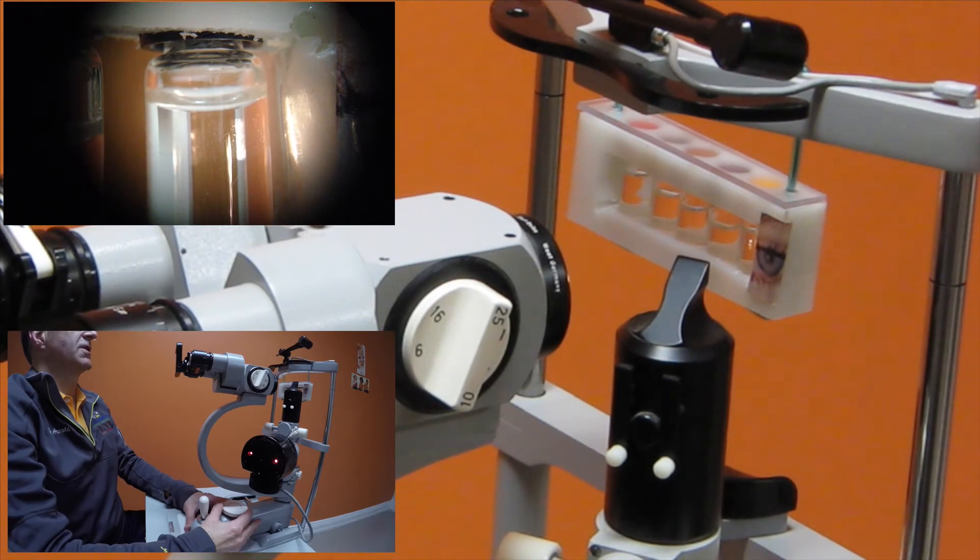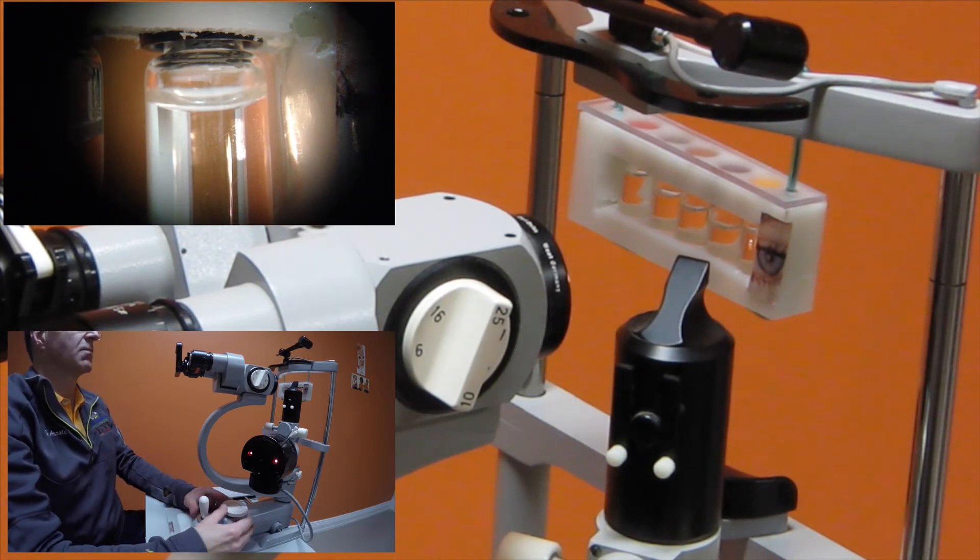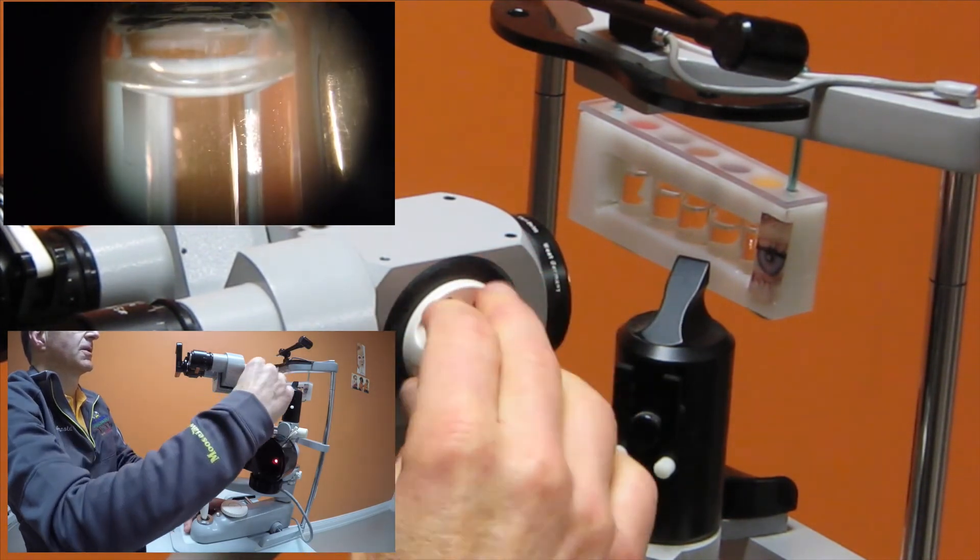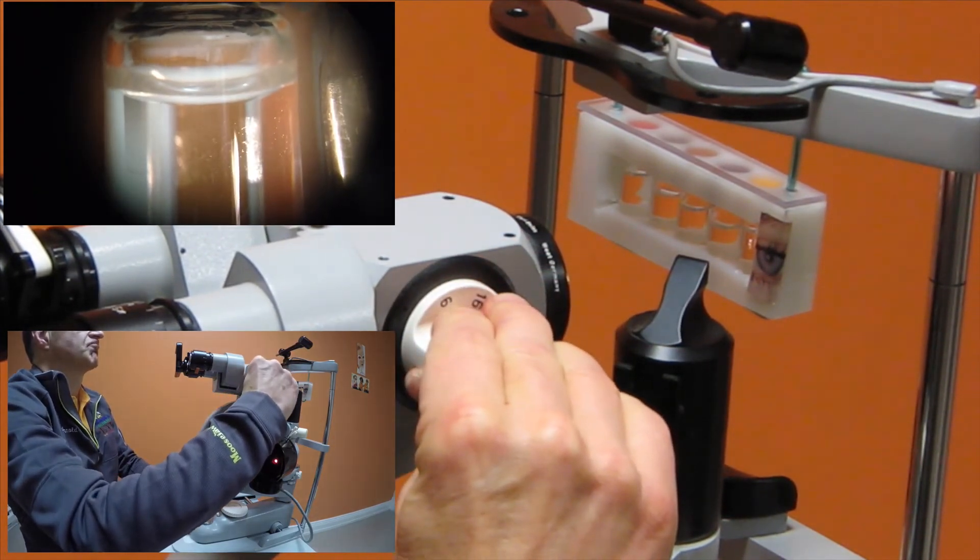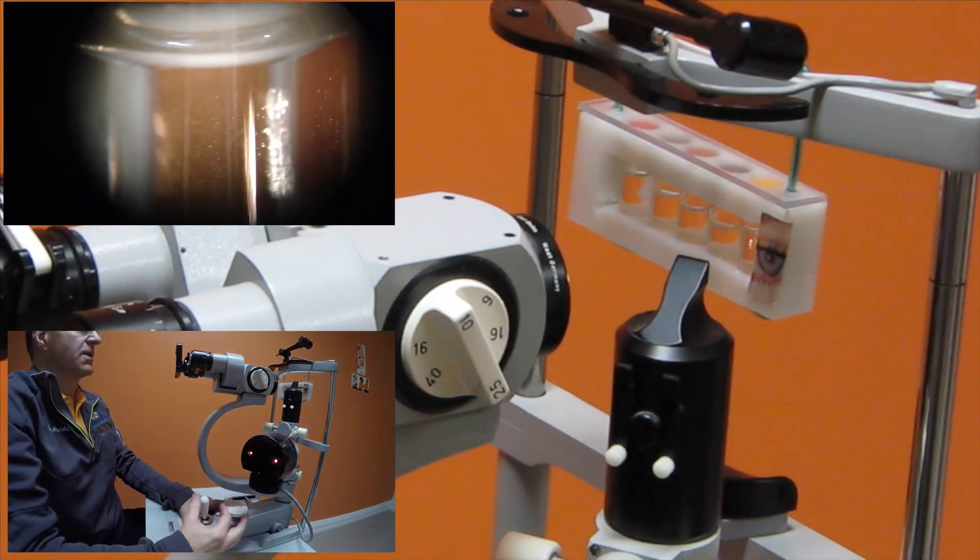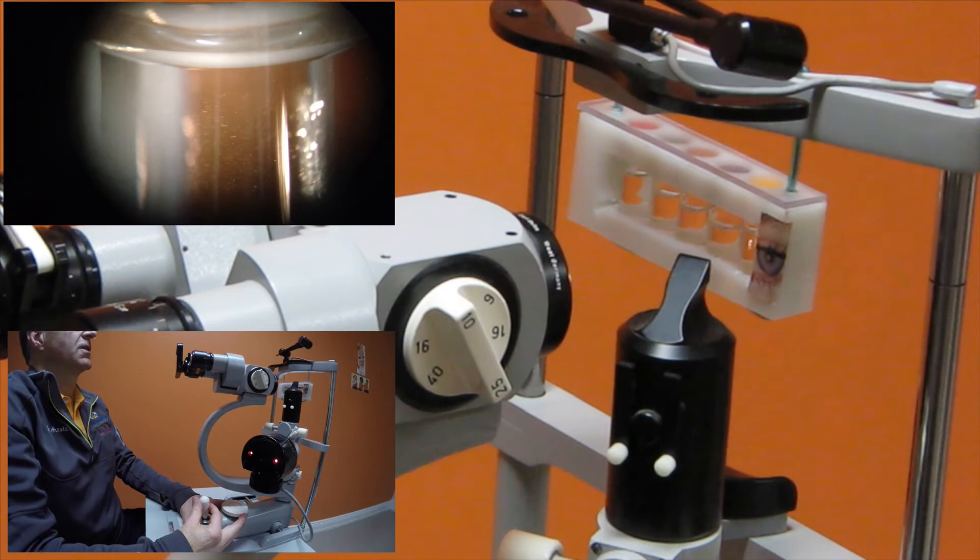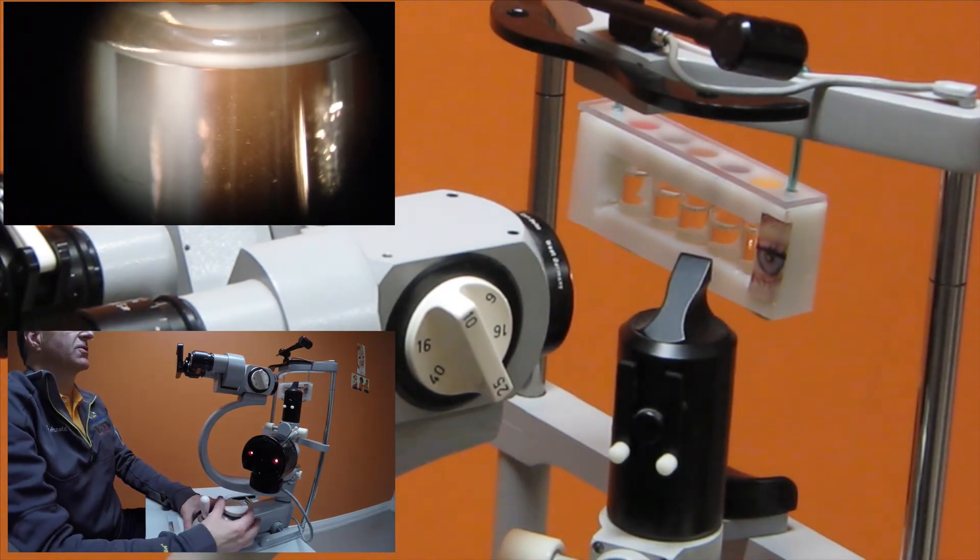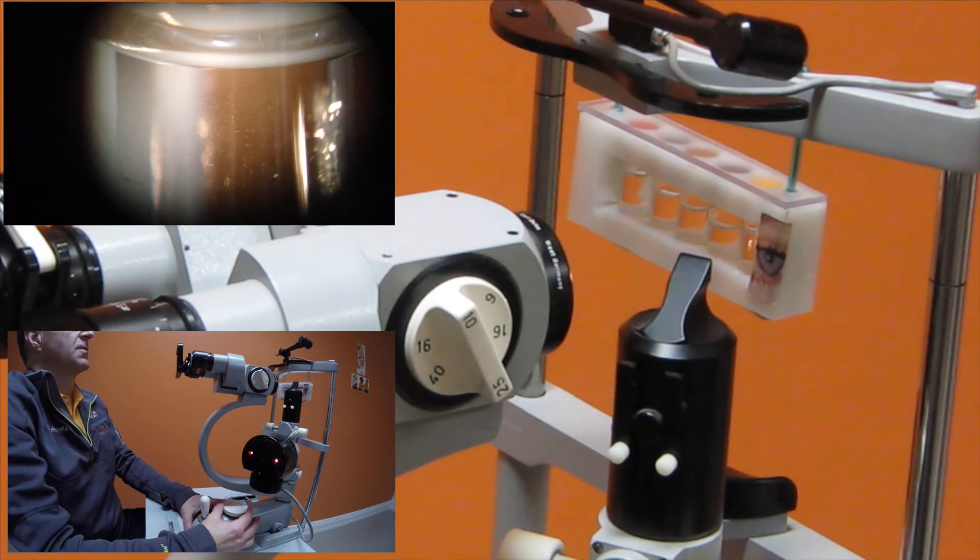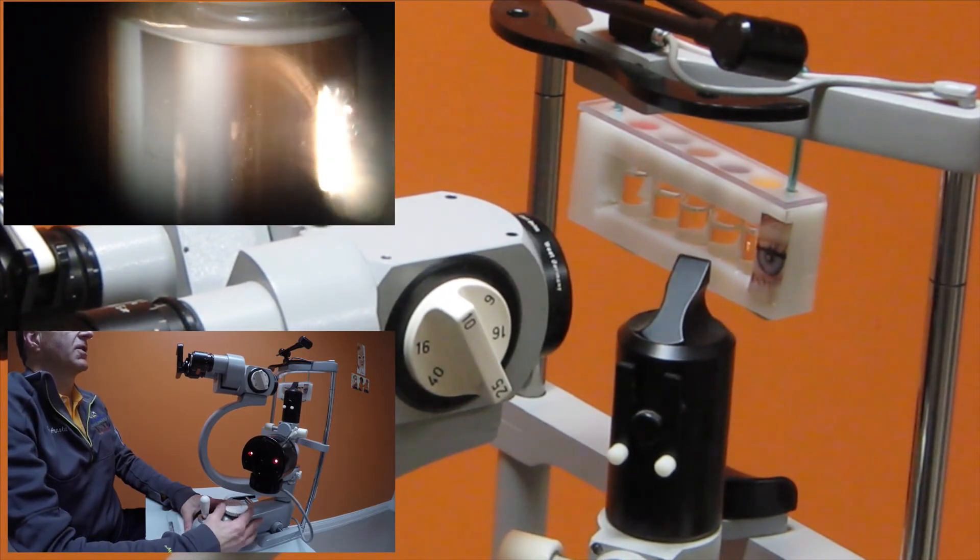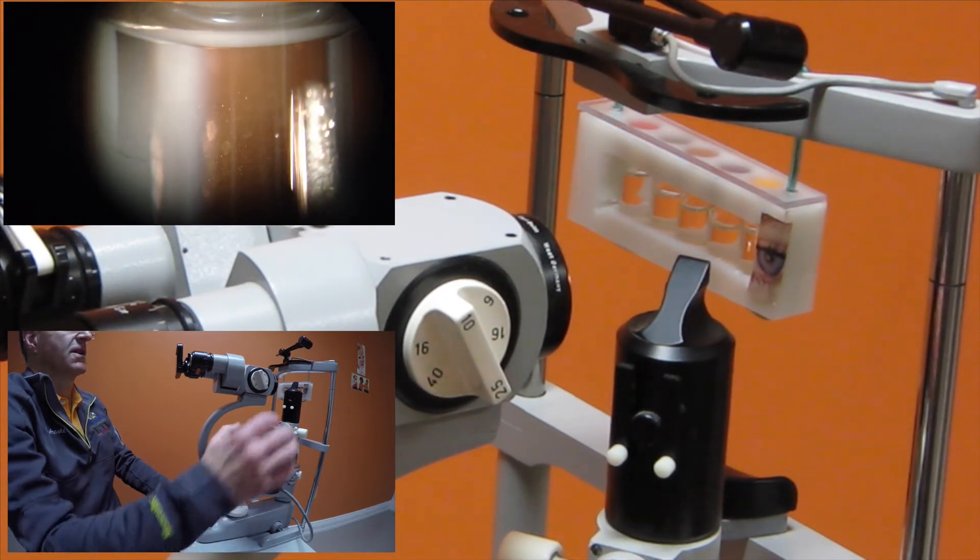As we're looking in the iritis test kit, we can actually see white blood cells and we're going to increase the magnification of this slit lamp. We will carefully move in so that our focus allows us to see the suspended white blood cell-like particles in the iritis test kit.